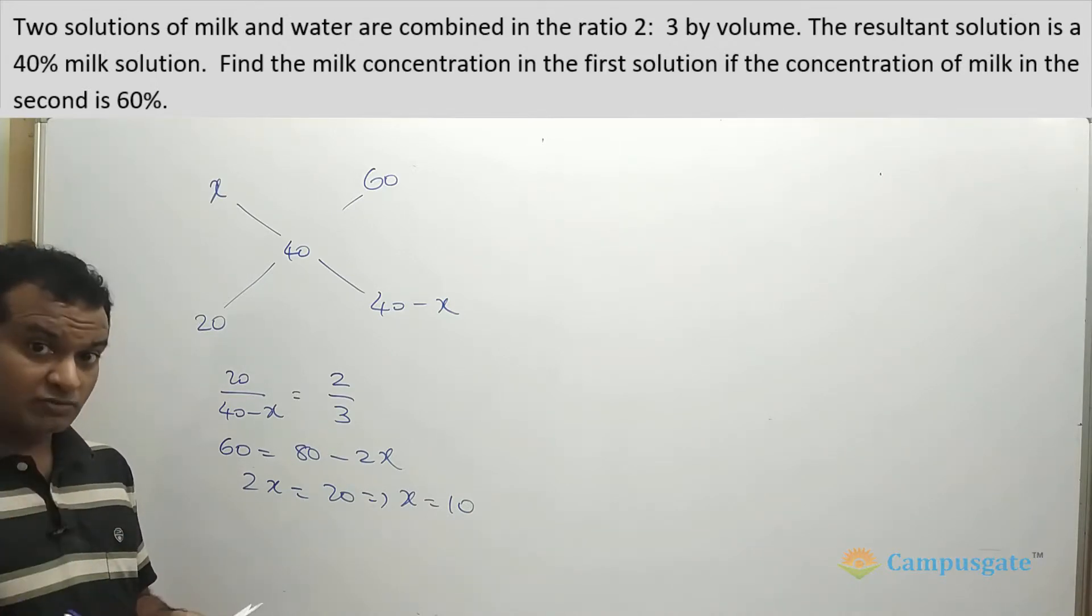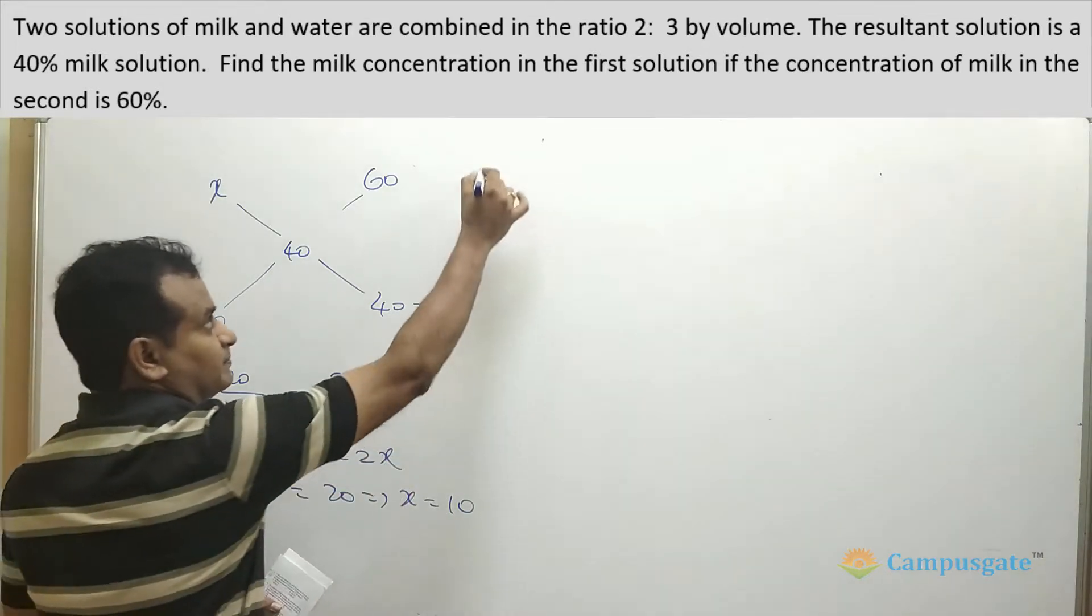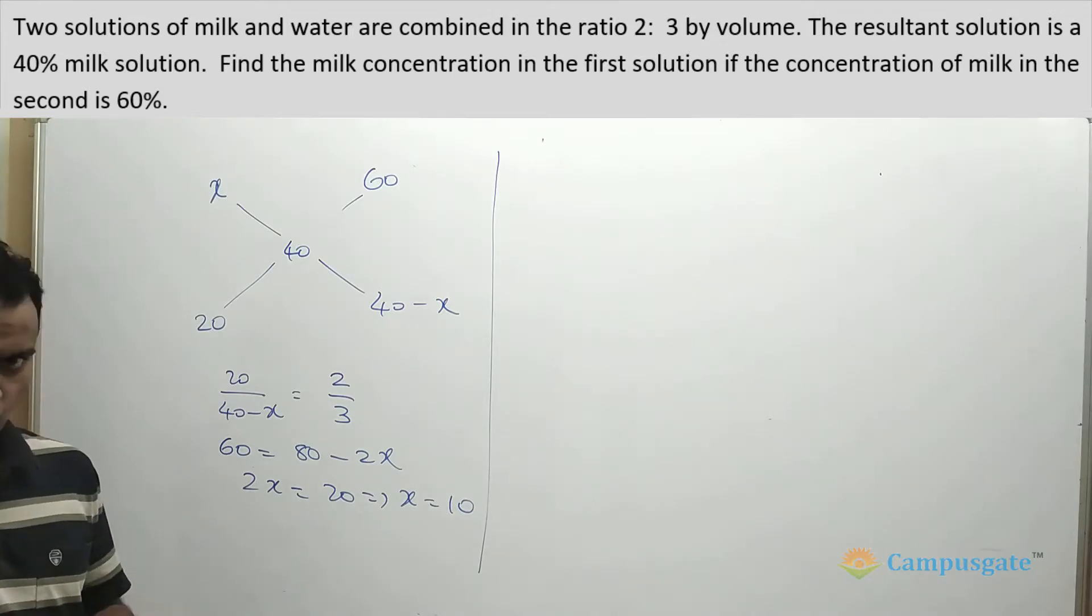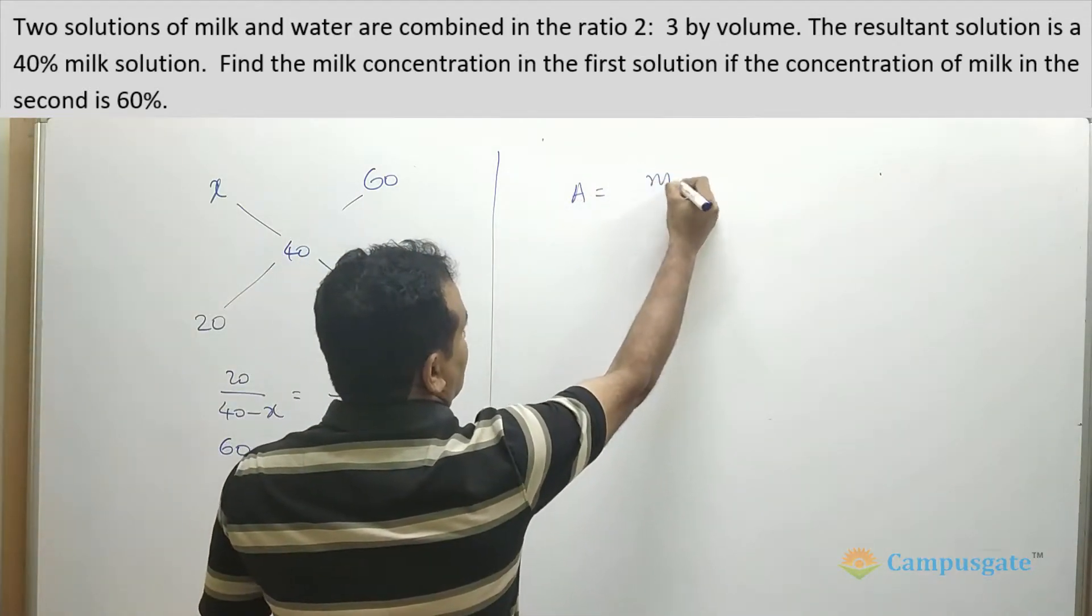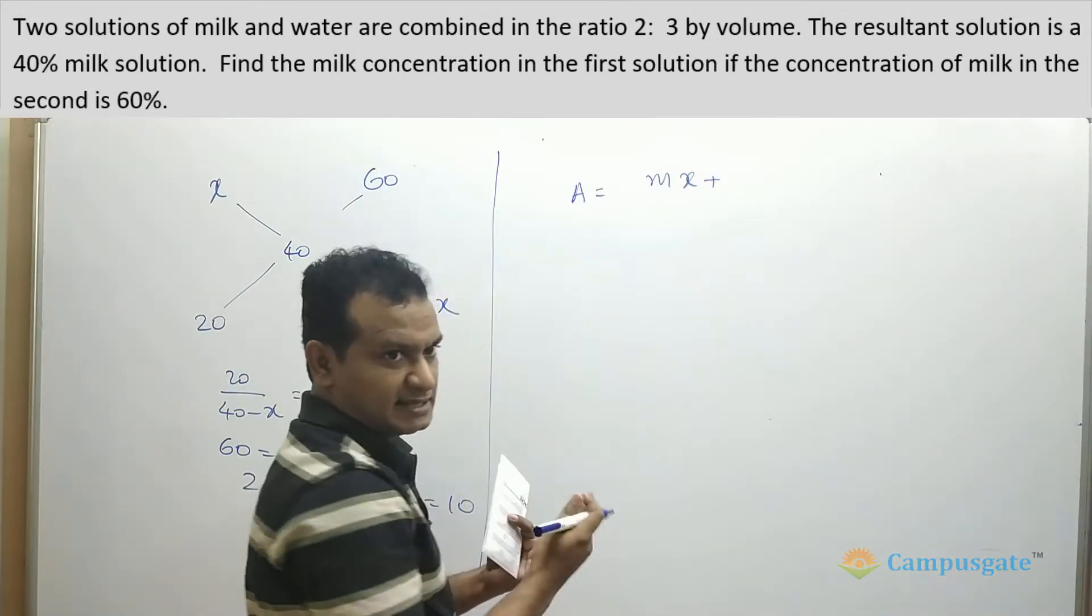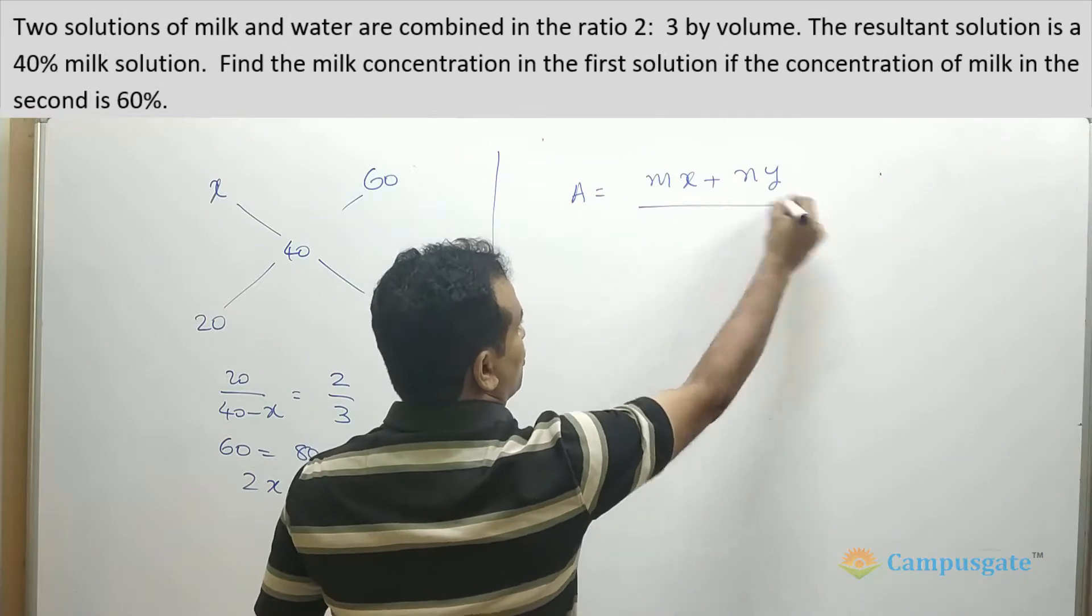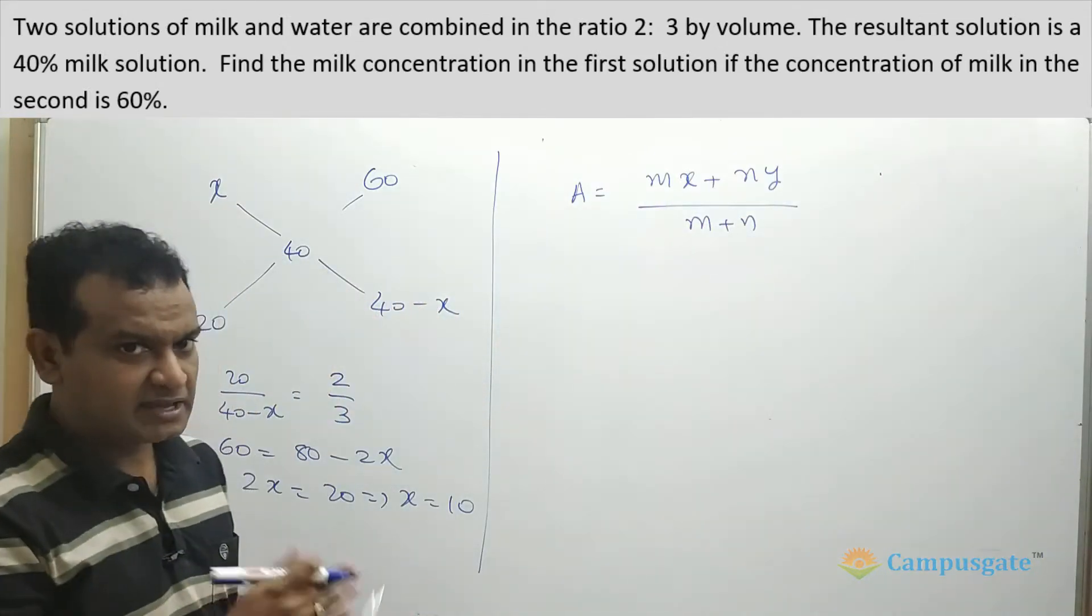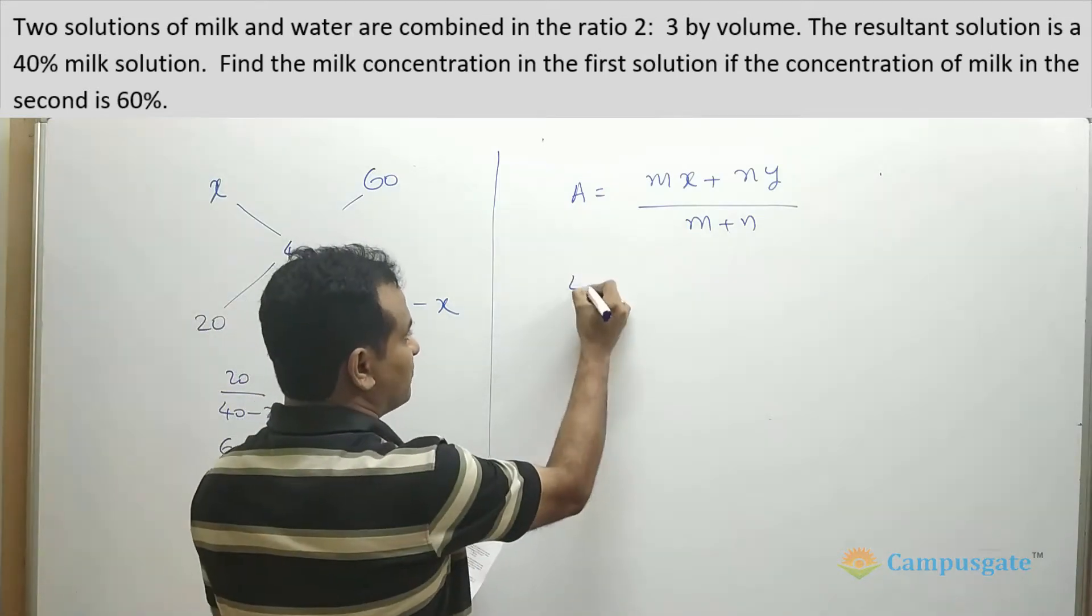And you can also solve this question by using the weighted average formula. That is also possible. So don't think that this question can only be solved by using allegation rule. The weighted average formula tells us that when there are two mixtures with x and y concentrations and we are mixing them in the ratio M and N, then the final average will be given by A.